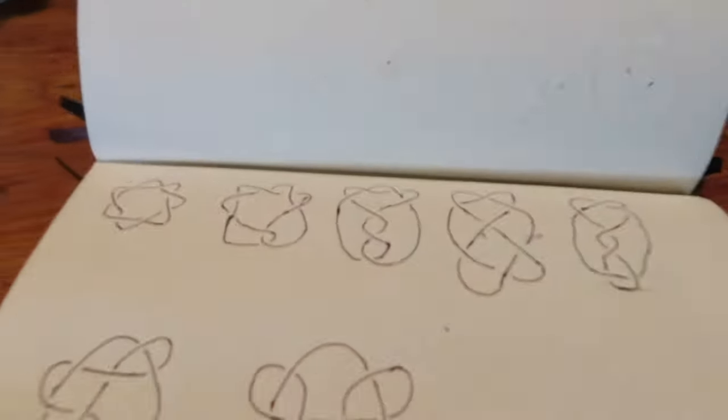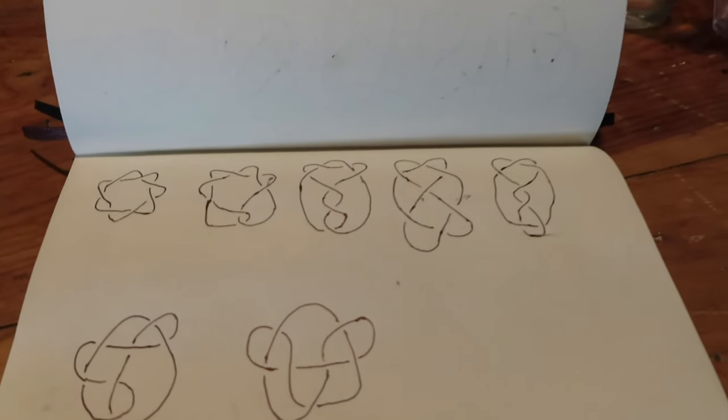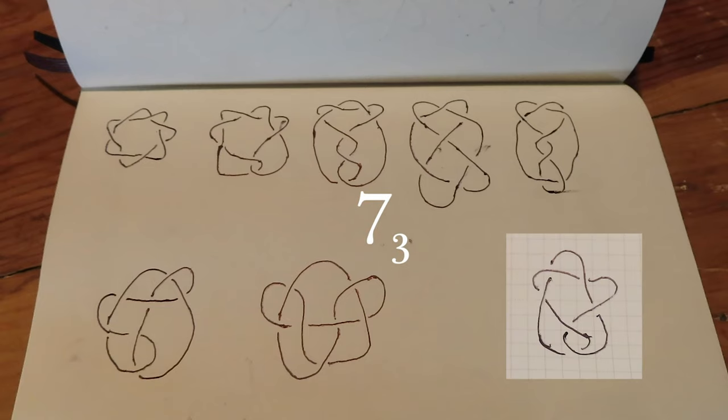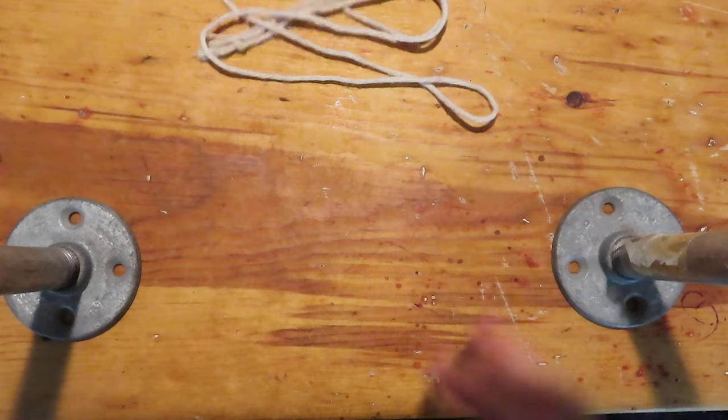Howdy! Today we're looking into the third of 7 knots with 7 crossings. This knot looks suspiciously like the 6-1 knot, but with an extra twist near the bottom. Because of this, you'd think that they'd be tied similarly, but you'd be wrong. So let's tie in.